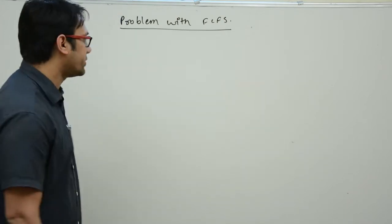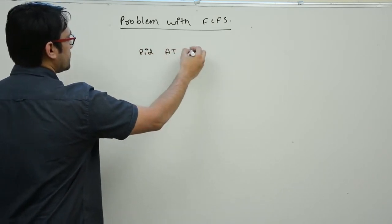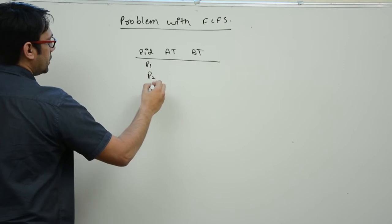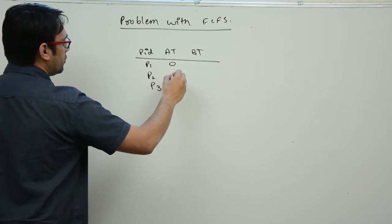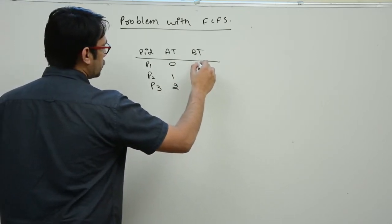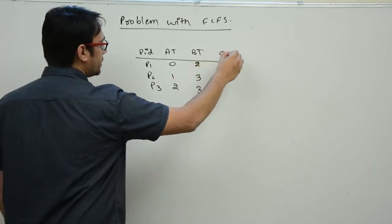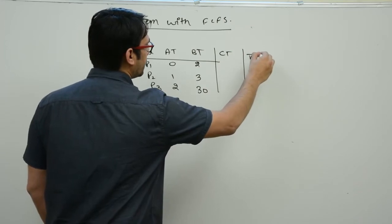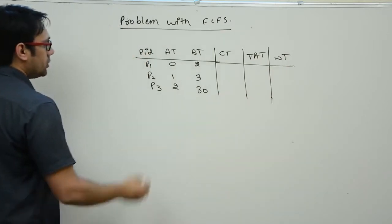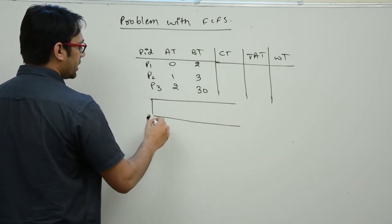Now let us look at what is the problem with the first-come-first-served scheduling algorithm. These are the processes: process IDs are P1, P2, P3; arrival time is 0, 1, 2; and the burst time is 2, 3, and 30. Let us find what is the completion time, the turnaround time, and the average waiting time.